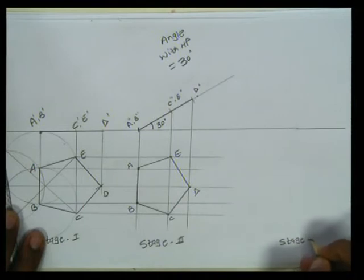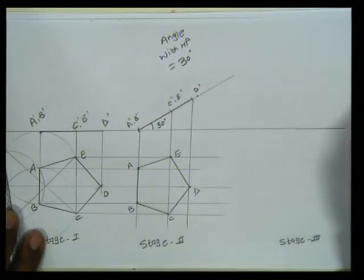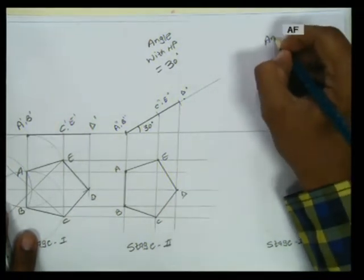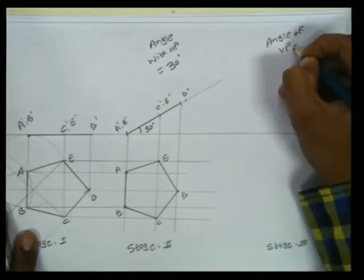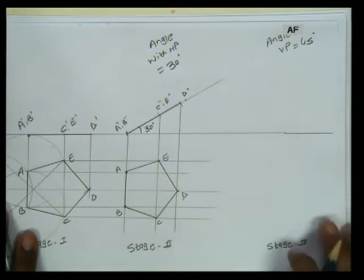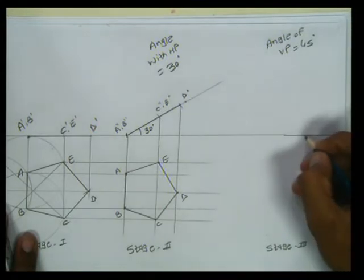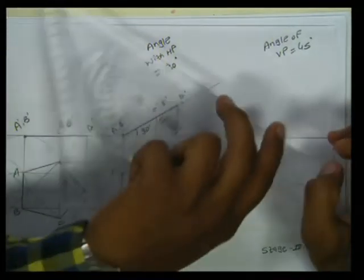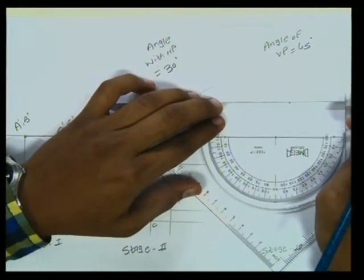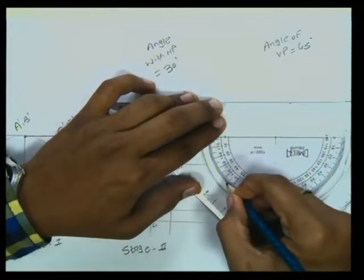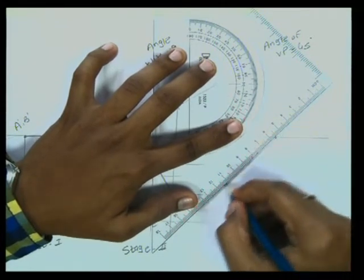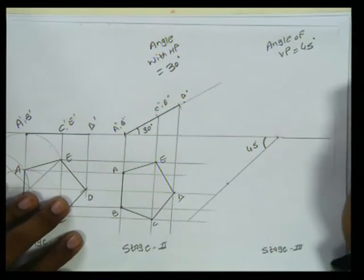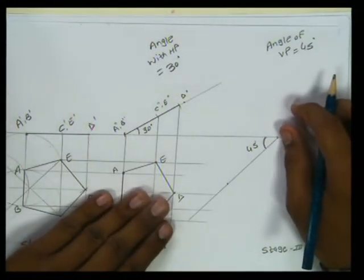We proceed to Stage 3, where the angle of HP will be incorporated with the angle of VP. The angle of VP is given as 45 degrees. So below the XY line, at any point, I will mark a reference line at 45 degrees below the XY line. This line at 45 degrees represents the angle with VP. Now I need to make a replica of Stage 2.